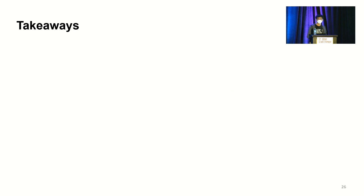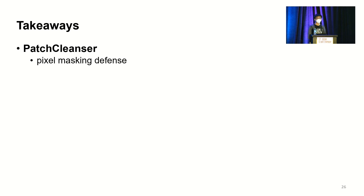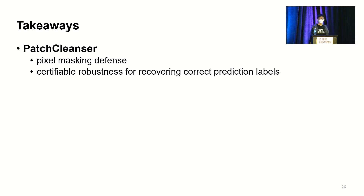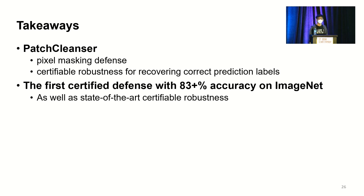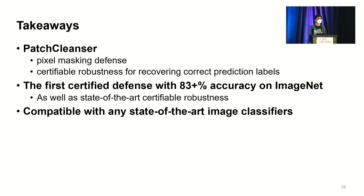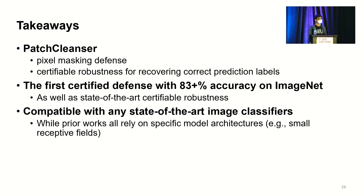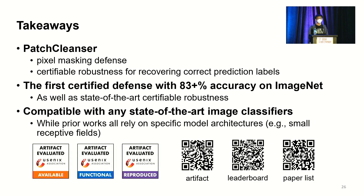In summary, we designed the Patch Cleanser defense using a pixel masking strategy, achieving certifiable robustness for recovering correct prediction labels. We are the first to achieve such high clean accuracy on ImageNet alongside state-of-the-art certified robust accuracy. Patch Cleanser is also compatible with any state-of-the-art image classifier, while prior works rely on particular model architectures. We have released the artifact on GitHub and maintain a leaderboard for robustness and a paper list for relevant research. Feel free to check it out — and I'm happy to take any questions.